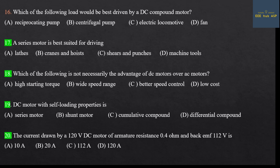Sixteenth question: Which load would best be driven by a DC series motor? Options include centrifugal pump, electrical locomotive, and lathe machine. Due to its high starting torque, the DC series motor is best suited for an electrical locomotive. Answer: DC series motor — high starting torque load.